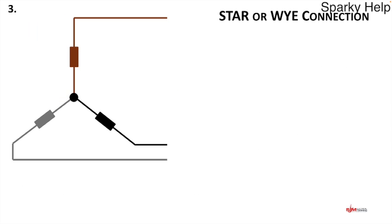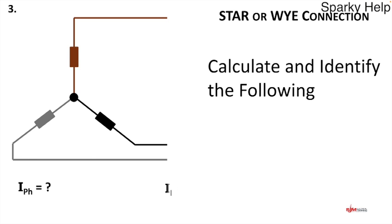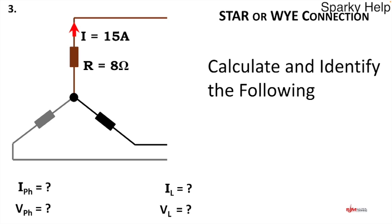Let's move on to question three — we'll come back to question two. This is another star or Y connection. Calculate and identify the following: i-phase, il, v-phase, and vl. I've told you nothing in the answer boxes, but looking at the drawing, the current is 15 amps and R equals 8 ohms. Use that information to fill in the rest. Pause the video, get your pen and calculator, and give it a go.